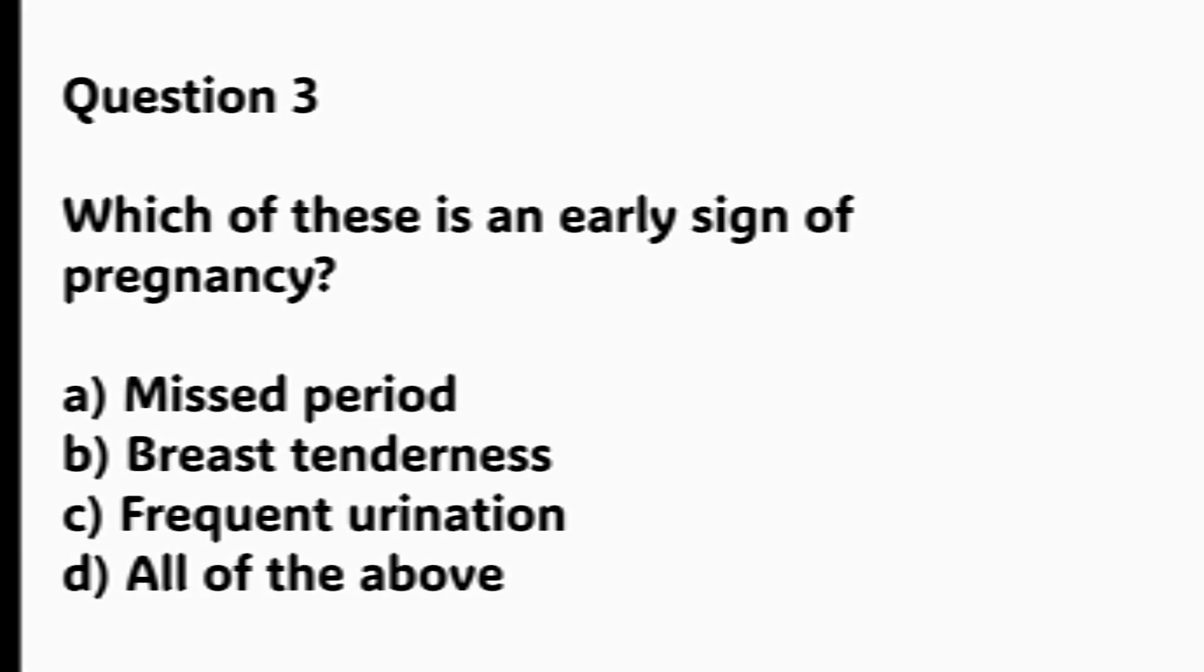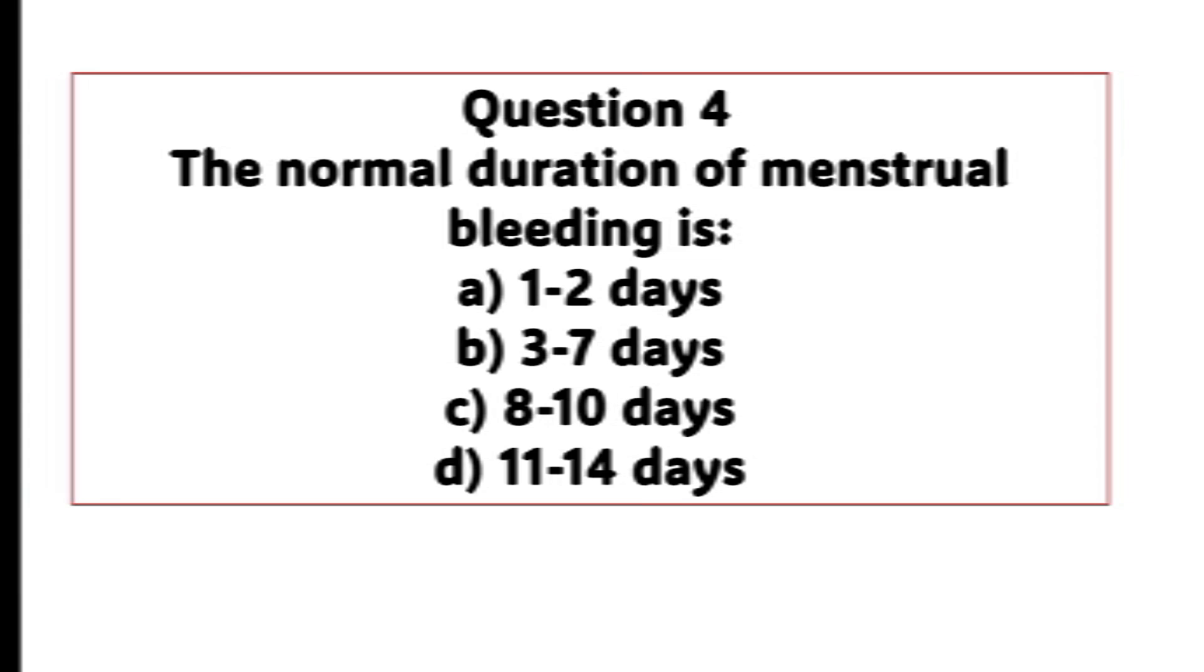Question number 4. The normal duration of menstrual bleeding is? The right option is B, 3 to 7 days.